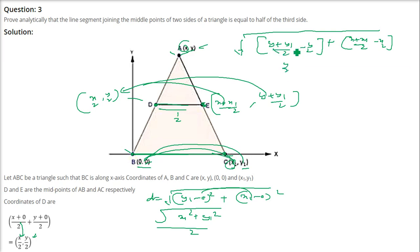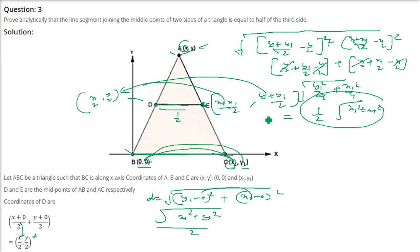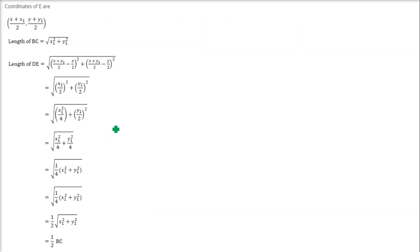Simplifying DE: the y-component becomes y1/2 and the x-component becomes x1/2, since the other terms cancel. So DE = √(x1²/4 + y1²/4) = (1/2)√(x1² + y1²). This equals BC/2, proving that DE is half of BC — which is what we needed to show.